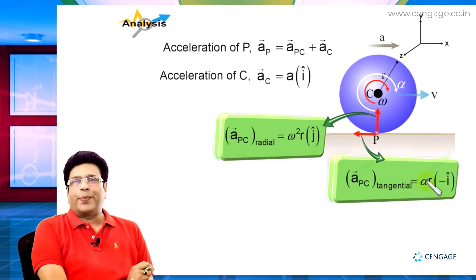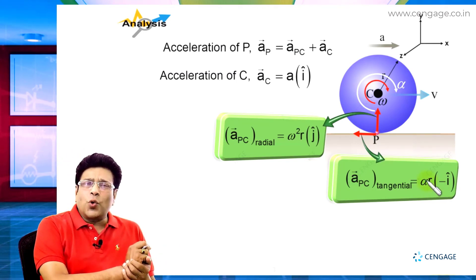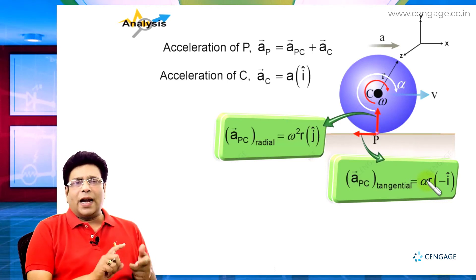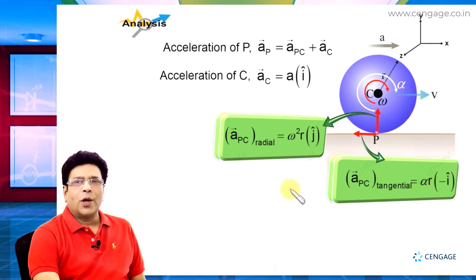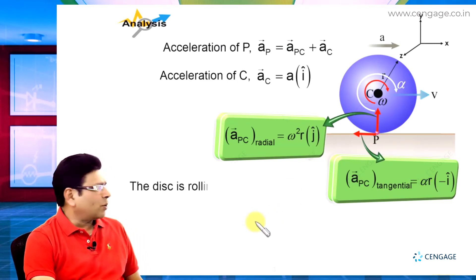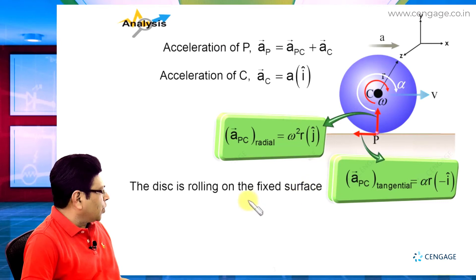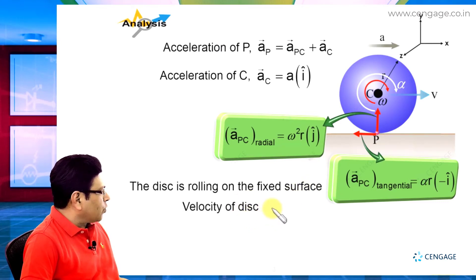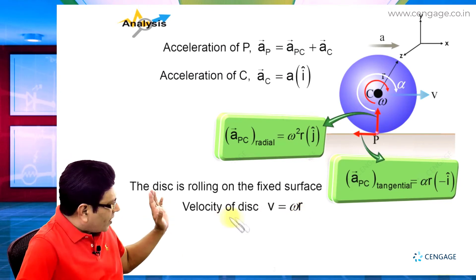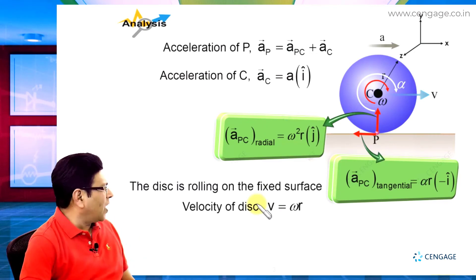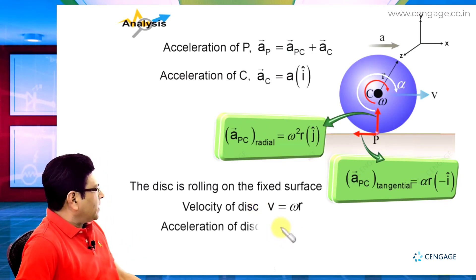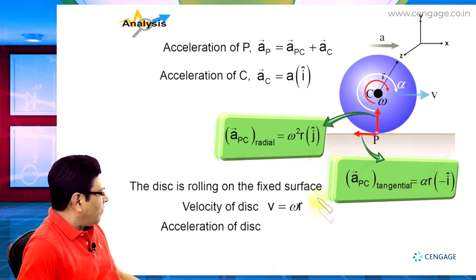The disk is rolling on a fixed surface. The constraint for rolling motion is v equal to omega r, where v is the velocity of the centre of mass and omega is the angular velocity. Similarly, the acceleration constraint for rolling is a equal to alpha r, where a is the linear acceleration of the centre of mass and alpha is the angular acceleration of the disk.